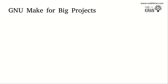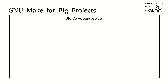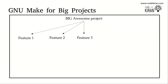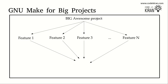When you have a big project, you may divide the features into different groups and give them to your software developers, naming them feature one, feature two, feature three, and so on up to feature N. These developers will put in time and effort to develop these features — either as source code or as object files — and finally you want to integrate them into a single target software product.